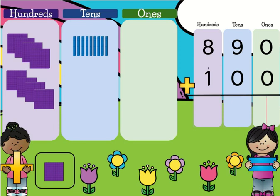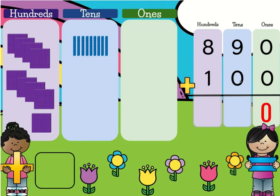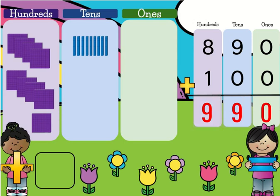I'm going to grab my 100 and bring it up there. Let's use our algorithm this time. 0 plus 0 is 0. 9 plus 0 is 9. And 8 plus 1 is 9. So 890 plus 100 is 990. Are you starting to see the pattern? When we don't add any 10s or 1s, the only digit that's going to change is in our 100s place.